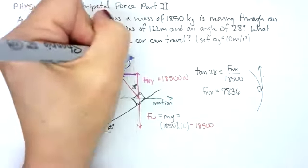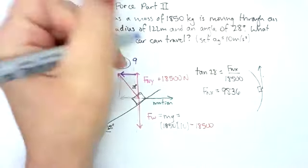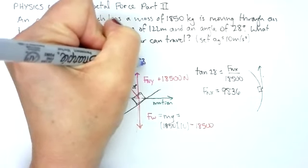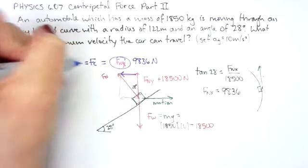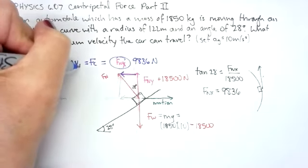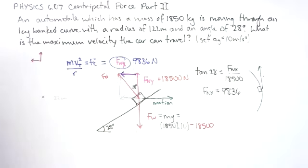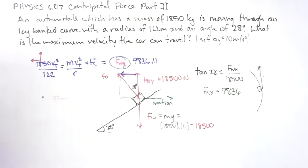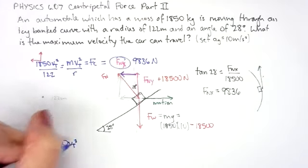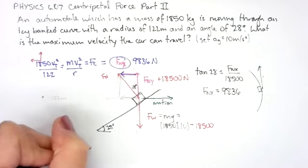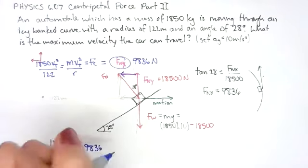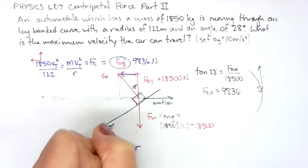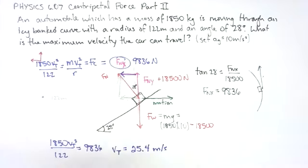What I have is that the force that's providing my centripetal force is 9836 newtons. And I know that my centripetal force is equal to mass tangential velocity squared over radius. My mass is 1850. I'm solving for vt squared, and my radius is 122. So when I break this down, I end up with 1850 vt squared over 122 is equal to 9836. And I get a velocity of 25.4 meters per second.